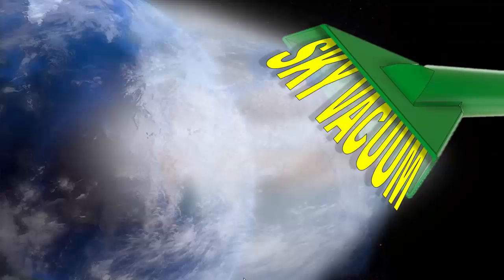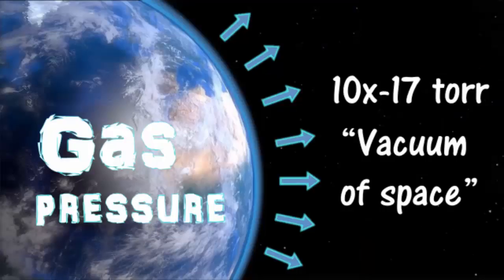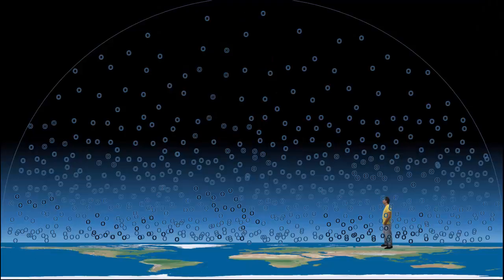Another ball-Earth pseudoscience myth has bitten the dust. This is a follow-up to my last video where I show that it's a myth that we could have gas pressure next to this so-called vacuum of space. In this video I want to point out that the fact that we can observe a pressure gradient in our atmosphere proves that our container is small because the gradient is within our observation.